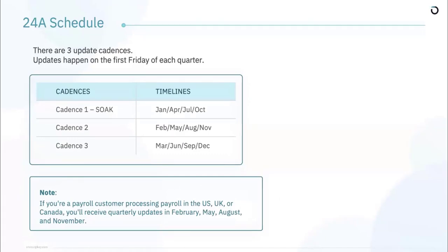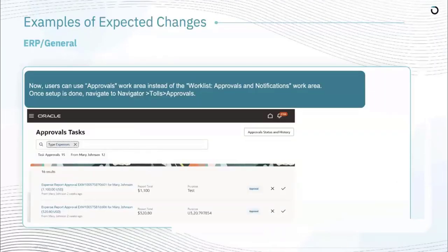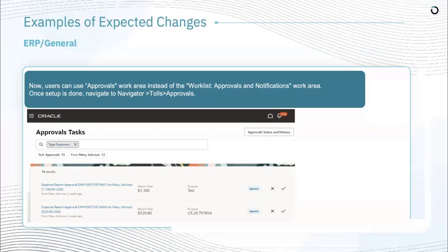From an update perspective, Oracle has three major cadences: the January cadence, the February cadence, and the March cadence. If you are a customer who has opted for payroll specifically, you have a different cadence. From a testing perspective, there are key things to manage in that schedule to validate the patch. Validation really starts from readiness — understanding how changes will reflect on your Oracle instance and how they affect the business processes your system is configured to support.